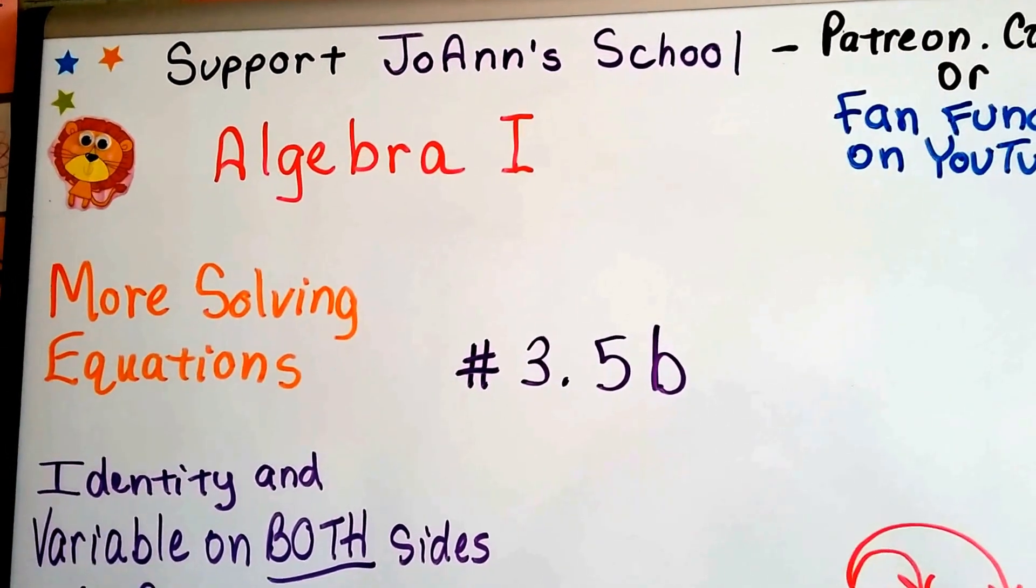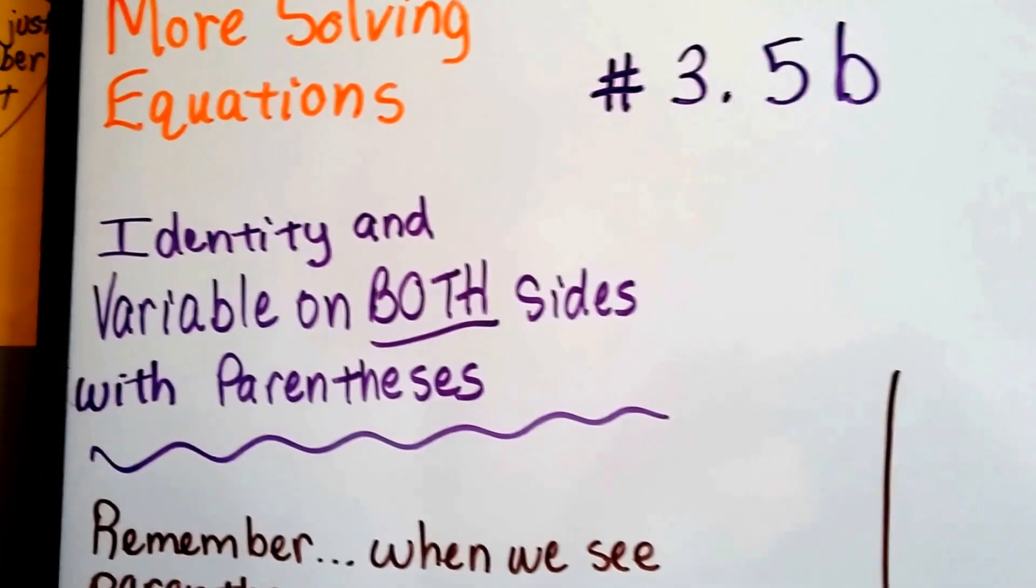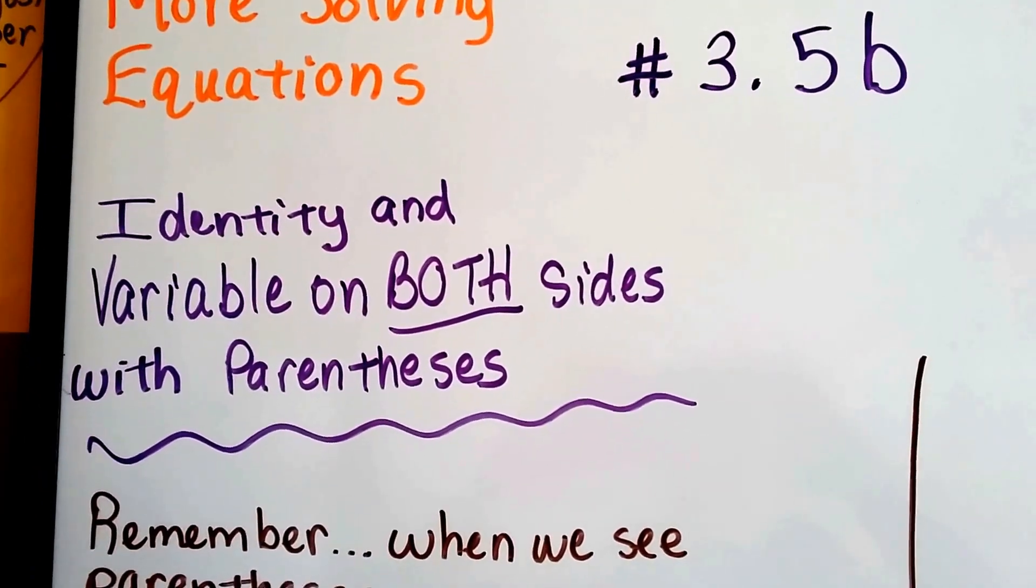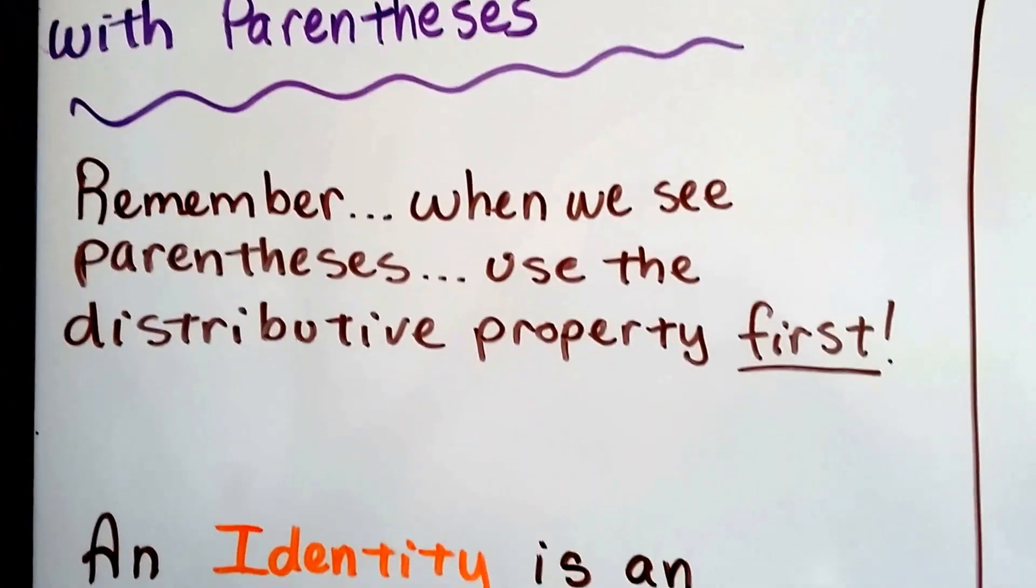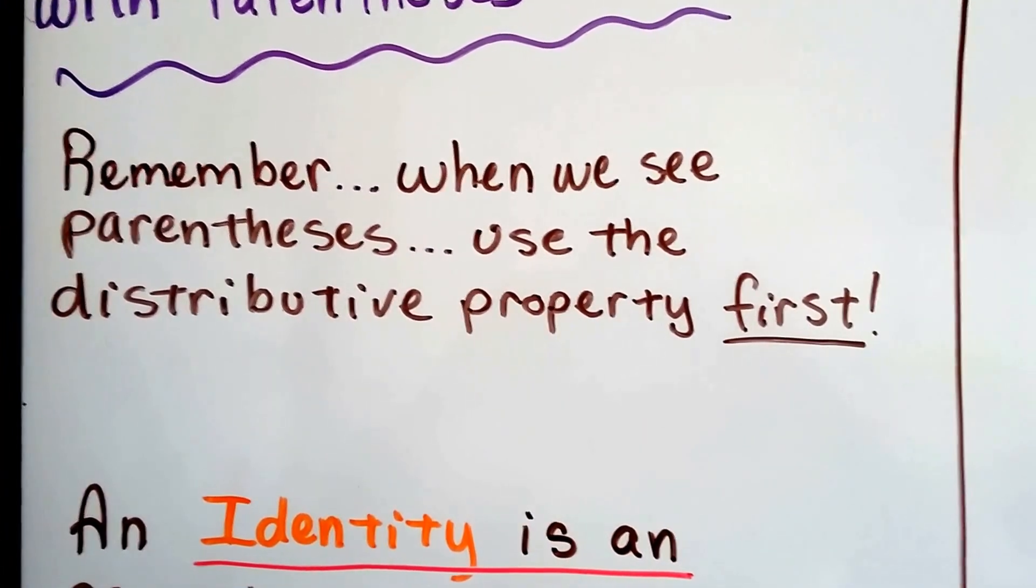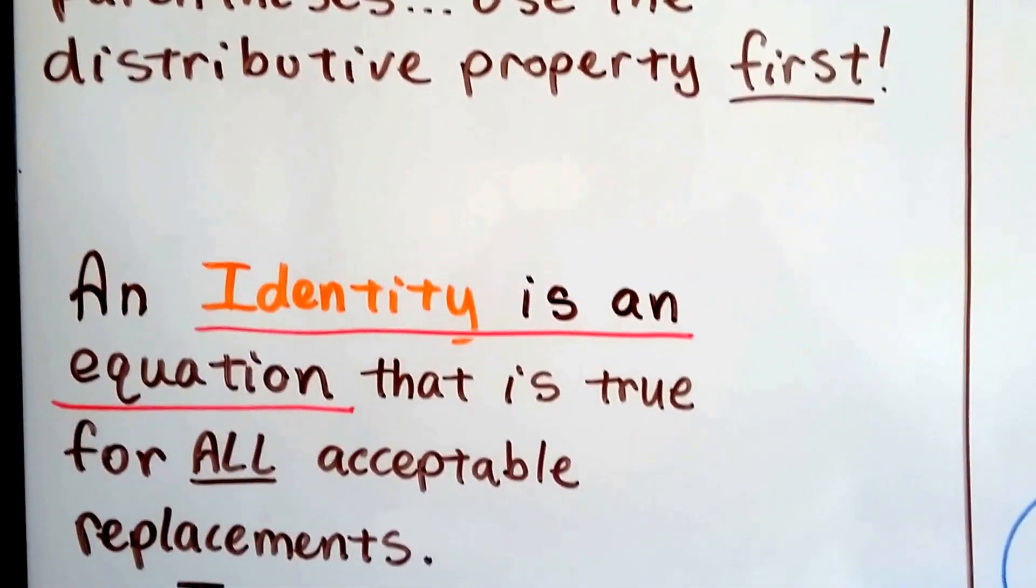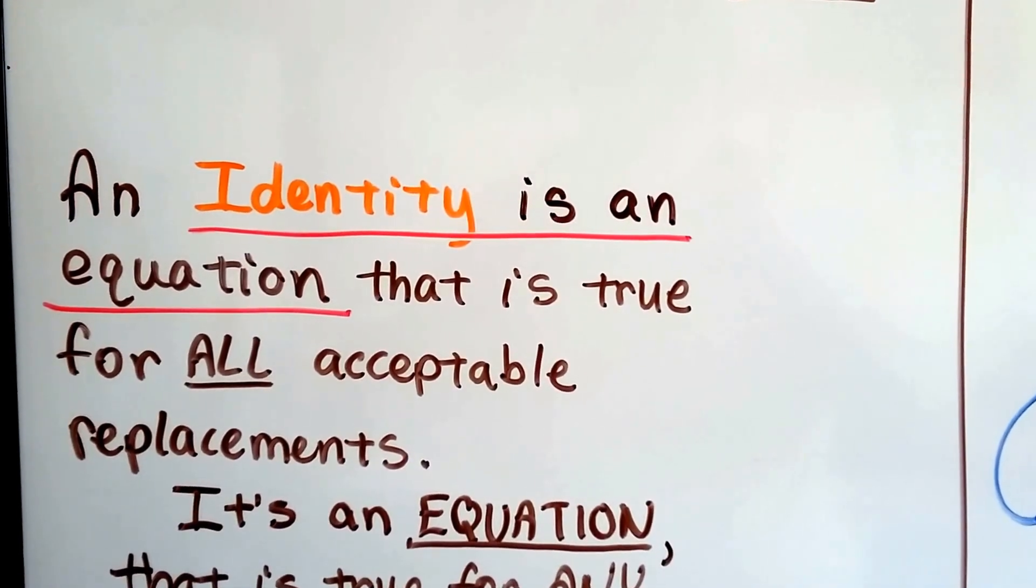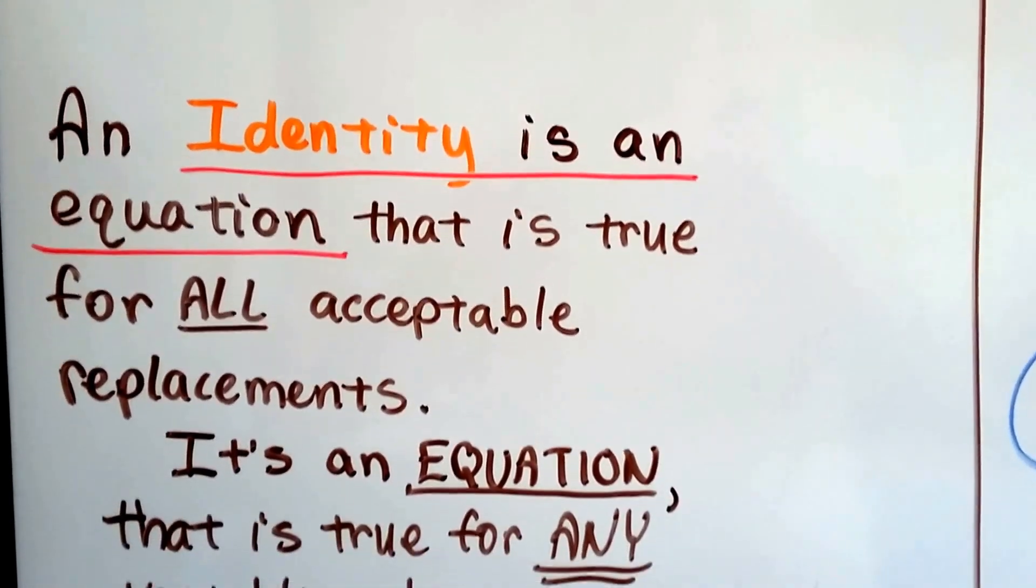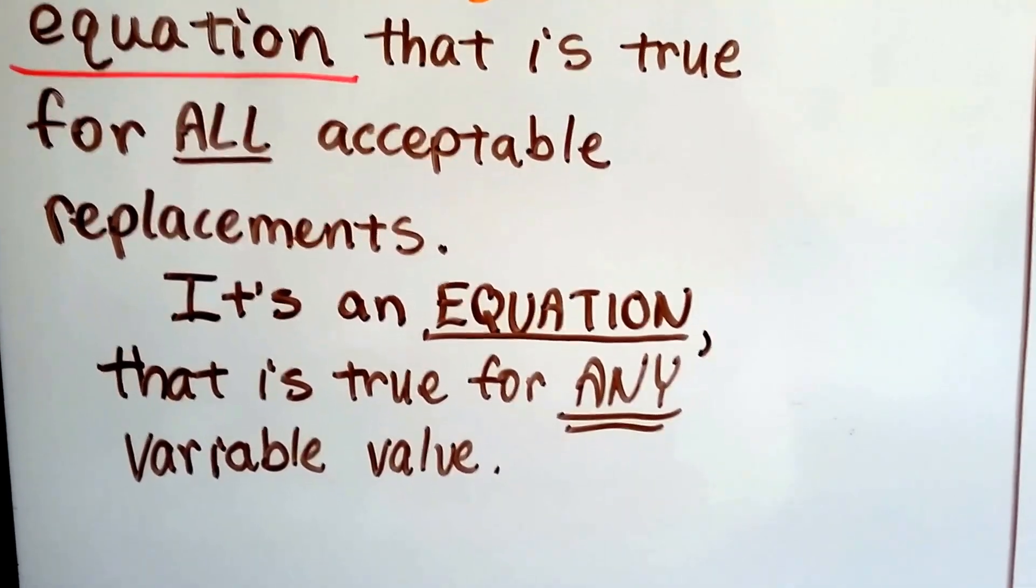Algebra 1, number 3.5b. We're solving equations. We're going to talk about identity equations and equations that have a variable on both sides with parentheses. Remember, when we see parentheses, we usually need to use the distributive property first. So an identity is an equation that is true for all acceptable replacements. What does that mean? Well, it's an equation that is true for any variable value.